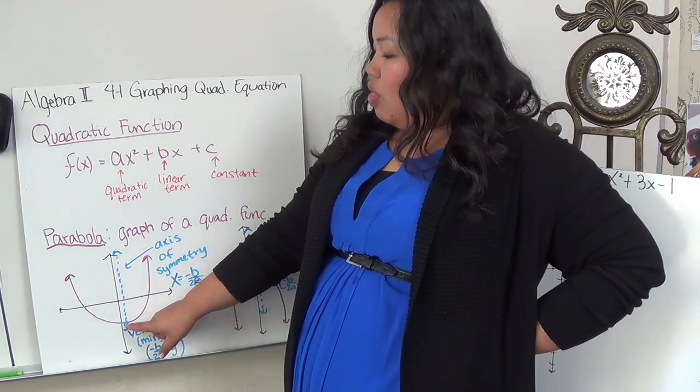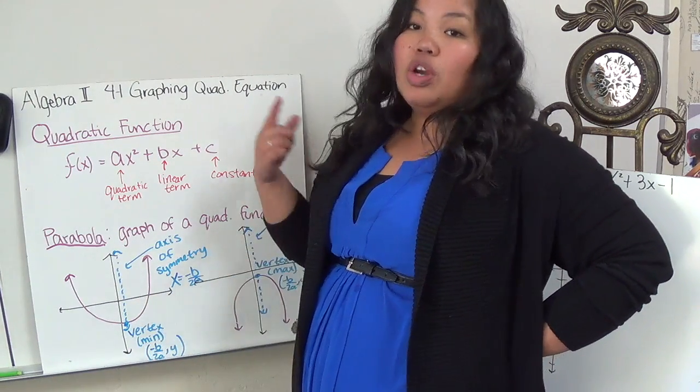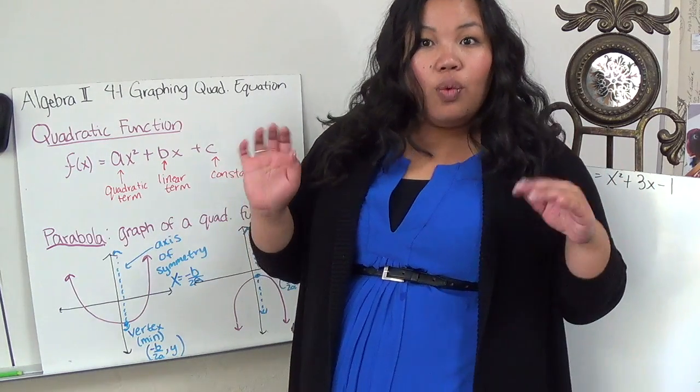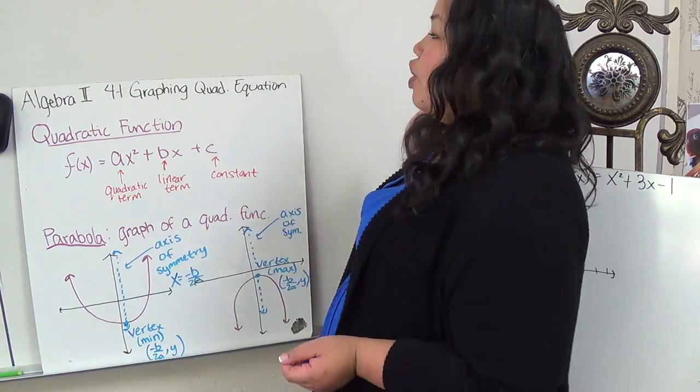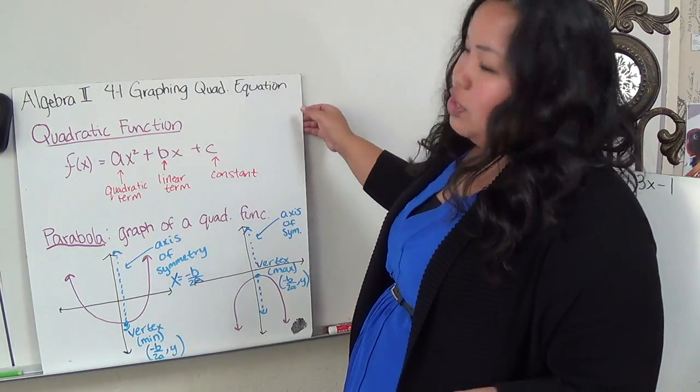Once you've located the point, then you can choose two numbers on the left, two numbers on the right, plug it into your equation, and find it. And that's all confusing, and you need an example. Well, I'm going to do an example. So, go ahead and pause this, write it down, and let's do an example.